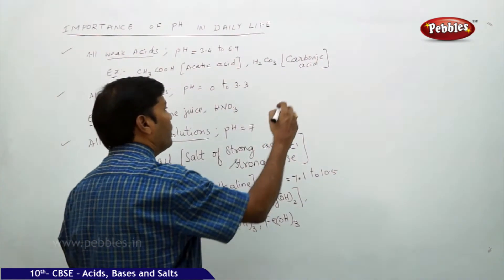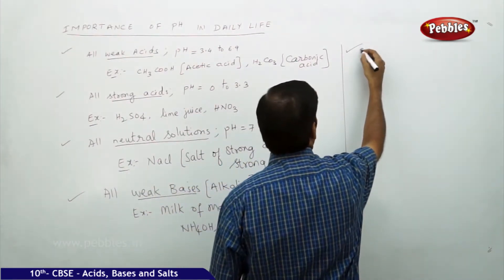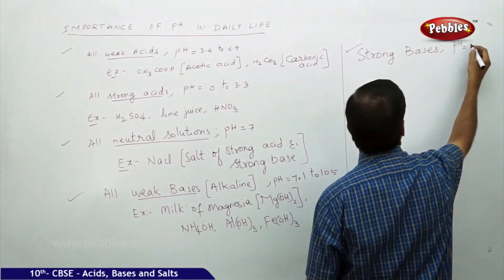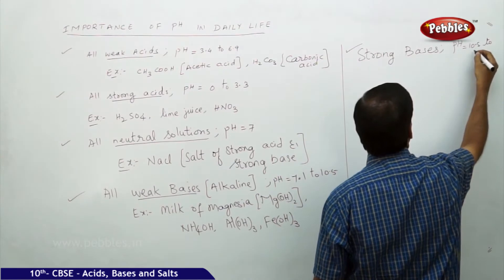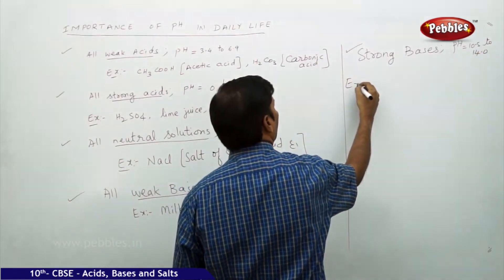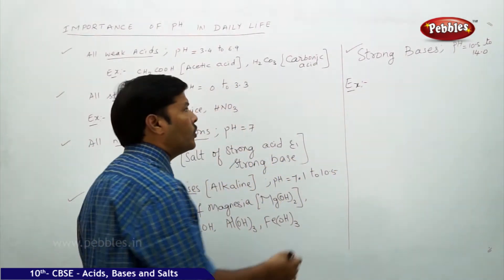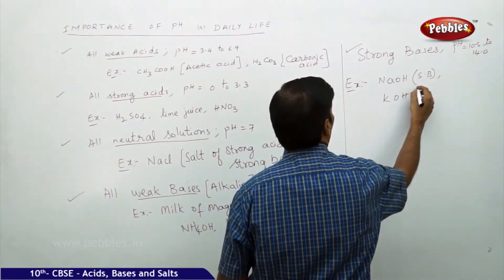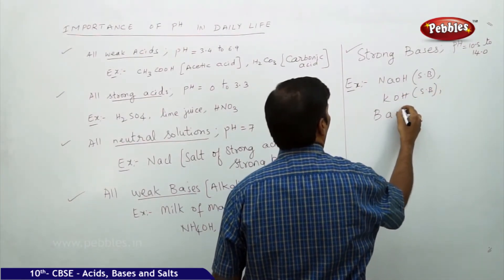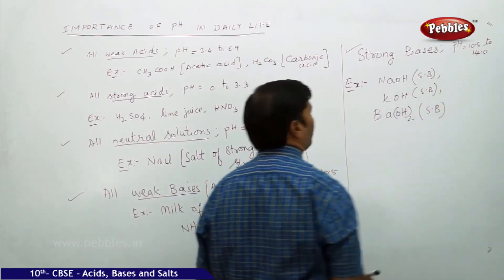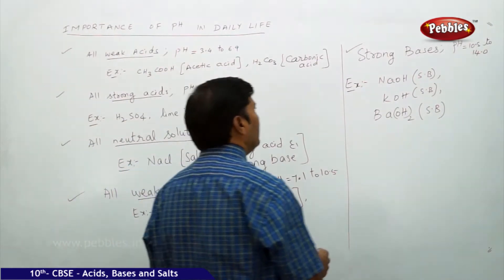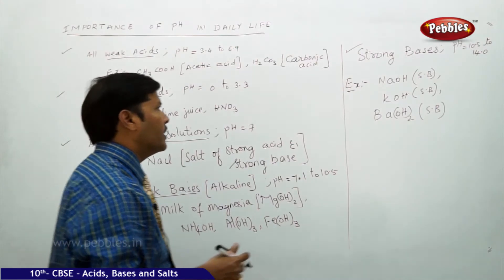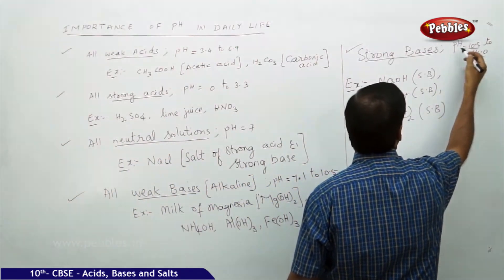For strong bases, the pH is equal to 10.5 to 14.0. Examples include NaOH, KOH, and barium hydroxide. Strong bases release OH minus ions spontaneously, more so compared to weak bases.